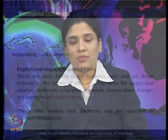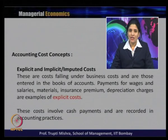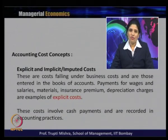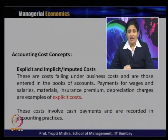The third category of cost is explicit or implicit (also called imputed) cost. Explicit costs fall under business cost and are those that enter in the books of account — payment for wages, salaries, materials, insurance premium, and depreciation charges are examples of explicit cost. All these costs involve a cash payment and are recorded in accounting practices.